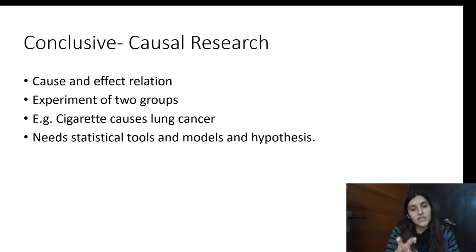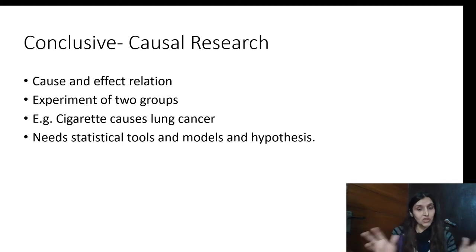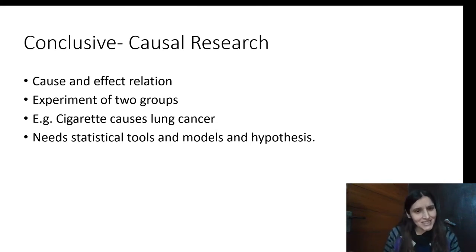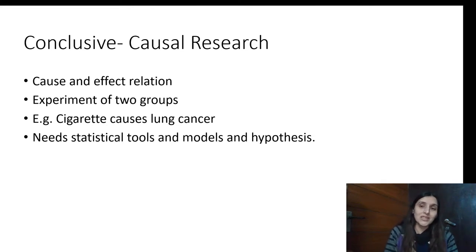Causal research is when we are trying to study the cause-effect between two factors. For example, the impact of attitude on intention, therapy on depression, GDP on FDI of a country, the impact of a COVID vaccine on an Indian, or the impact of a chemical on a particular organism — all these are cause-effect relationships. They can be established through experimentation, and in social sciences, we use correlations and regressions.